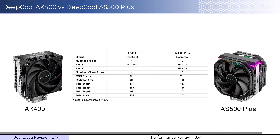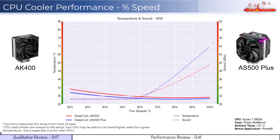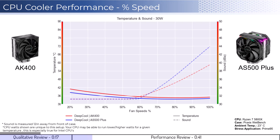Next, let's dig into the performance. We're going to cover two sets of graphs: one normalized by percent speeds and the second normalized by noise levels. Note that these graphs are created by using machine learning models to help break down the performance using over a million data points in an open case. This means that performance may differ depending on your case's airflow and your CPU.